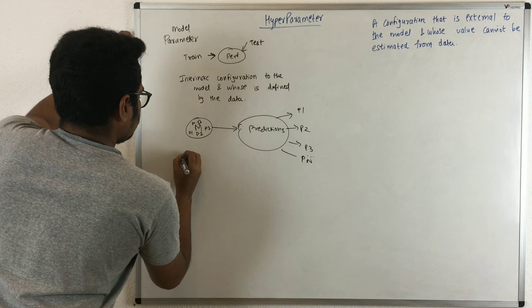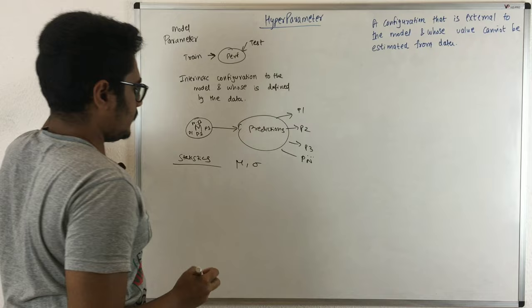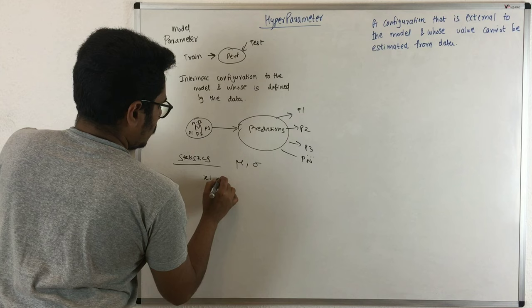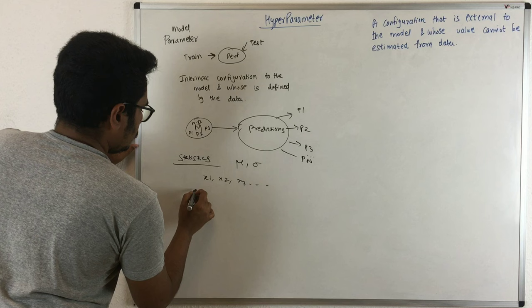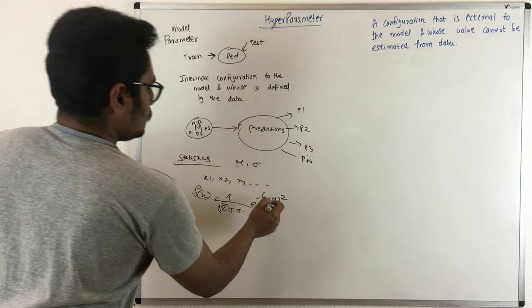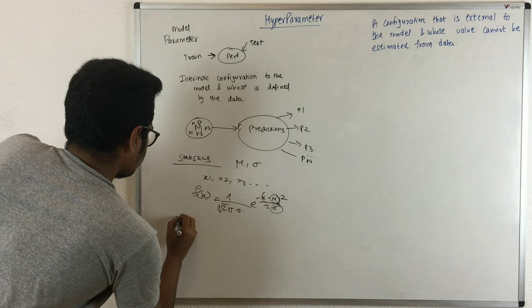In terms of statistics, we have parameters mu and sigma - mu is the mean and sigma is the standard deviation. These parameters are derived from the data we have, like data points x1, x2, x3. To estimate the normal distribution, we use the formula e raised to (x minus mu) squared over 2 sigma. You put the values of mu and sigma into this formula to estimate the function.